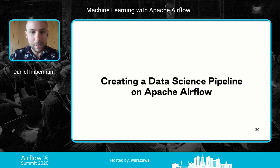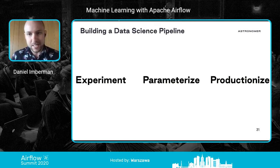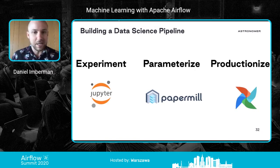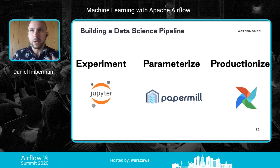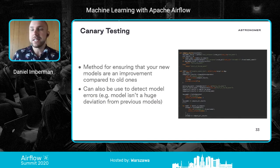Finally, let's talk about the process of creating a data science pipeline in Apache Airflow. There are three main steps: experimenting, parameterizing, and productionizing. By using Jupyter to experiment and Papermill to parameterize, you end up with a system where Airflow can handle major machine learning steps like hyperparameter tuning and canary testing. Canary testing is a method for ensuring new models are an improvement over older ones — it can detect model errors like huge deviations in accuracy or accuracy drops, and use the Python branch operator to decide whether to deploy the new model.